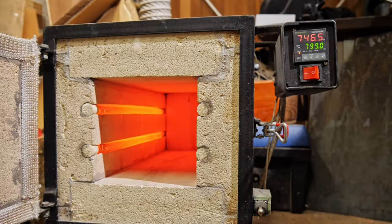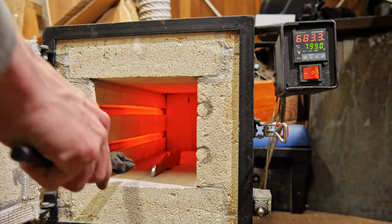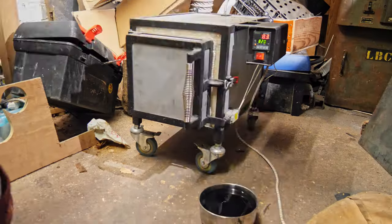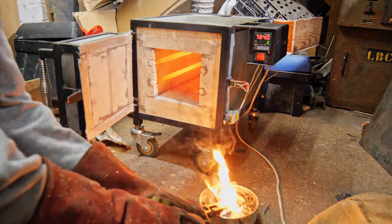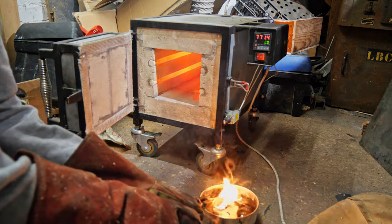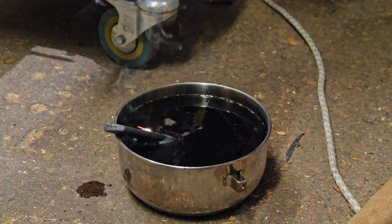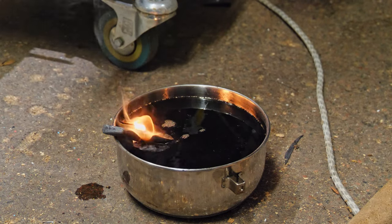So now the blade is looking really nice it's time for the heat treat again and it's made so easy with this homemade heat treatment oven. I let the blade soak for a while at 800 degrees celsius and then quench it into some cold motor oil. The rapid cooling of the O1 tool steel changes the grain structure within the metal and causes it to become really hard.